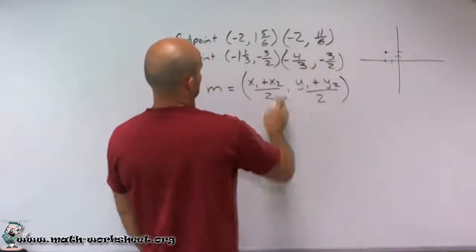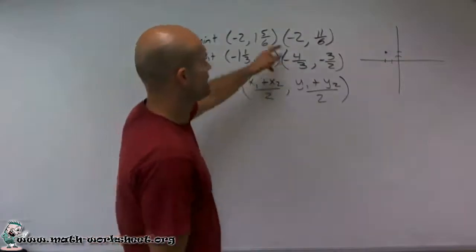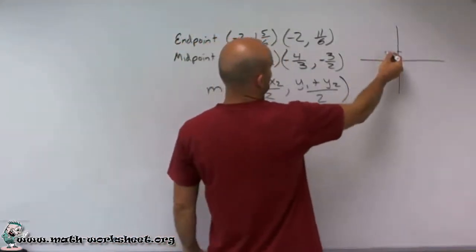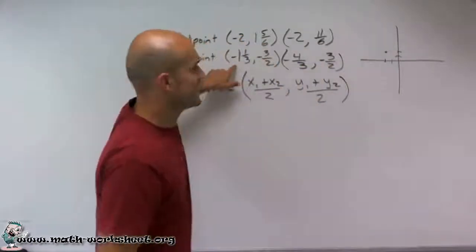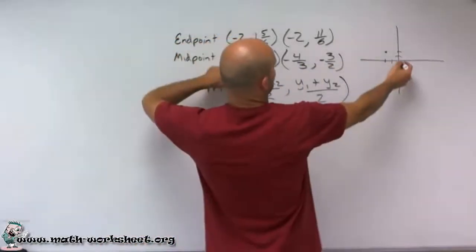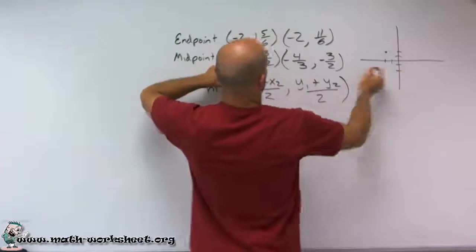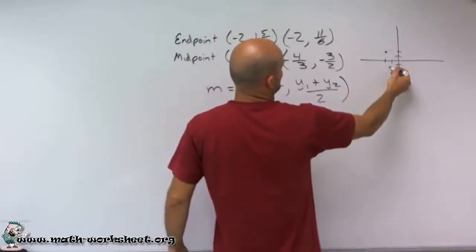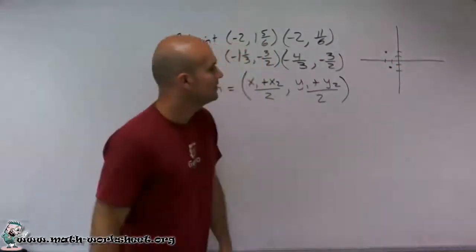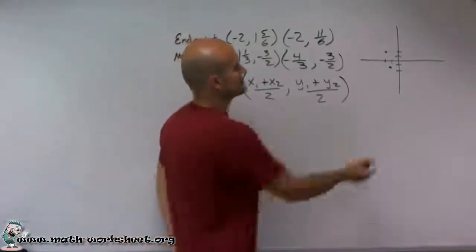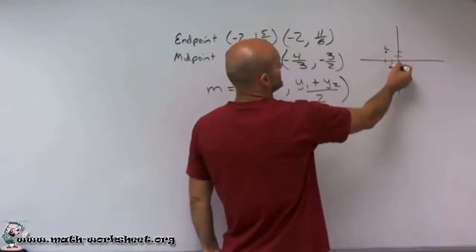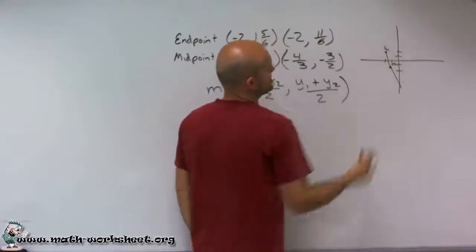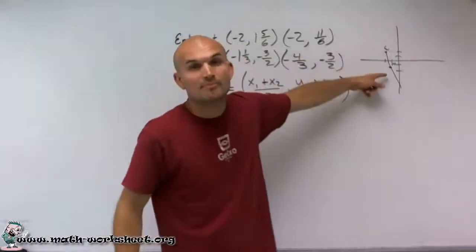My second point is negative 1 and 1/3, and then down negative 1.5. It's going to look something like that. So what I have here is I have my distance from my endpoint to my midpoint, and we're going to be looking something like that, where this is your midpoint. It's halfway there.